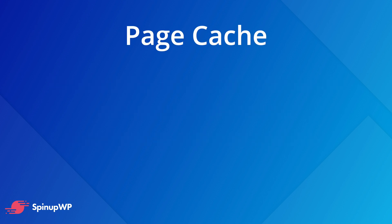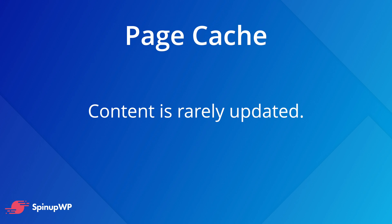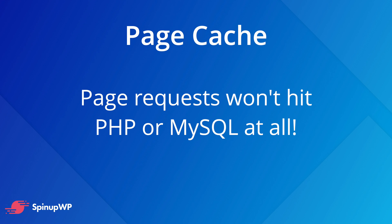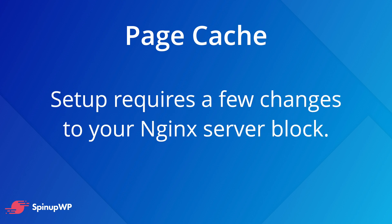Enter page caching. For many sites, content is rarely updated, so it's not efficient to load WordPress, query the database, and build the page on every single page request. Instead, we can serve a static HTML version of the requested page. Nginx allows you to automatically cache a static HTML version using the FastCGI module. Once you've visited a page, any subsequent request will receive the cached HTML version without ever hitting PHP or MySQL — which means a happy server. Getting set up requires just a few changes to your Nginx server block.